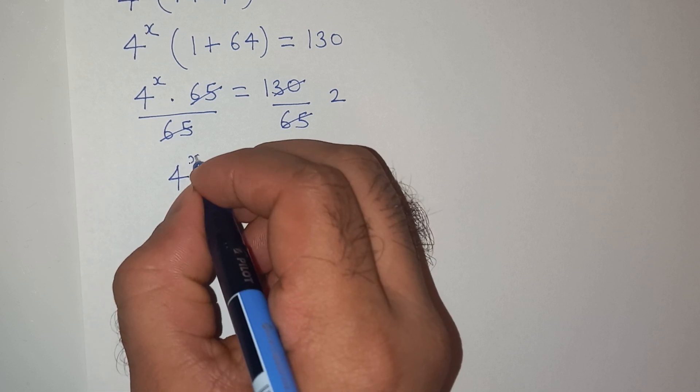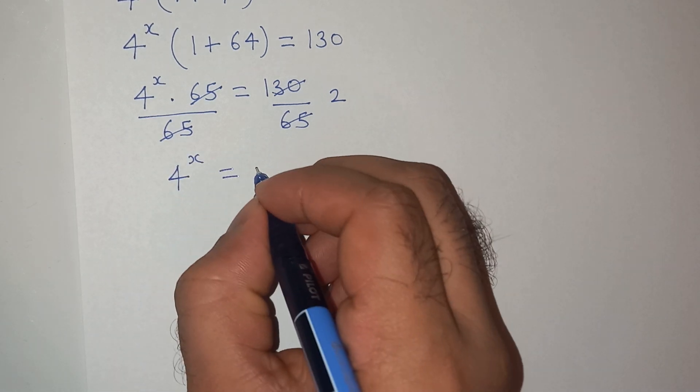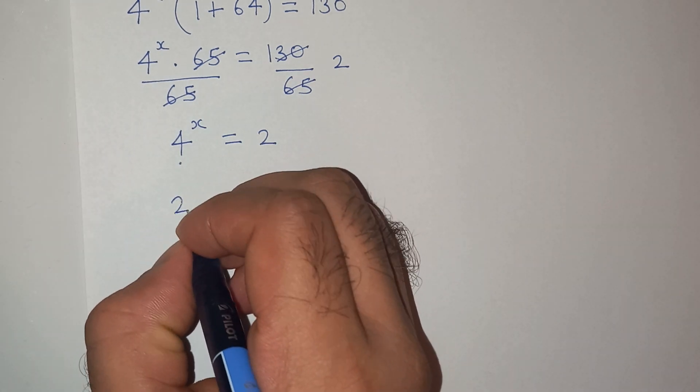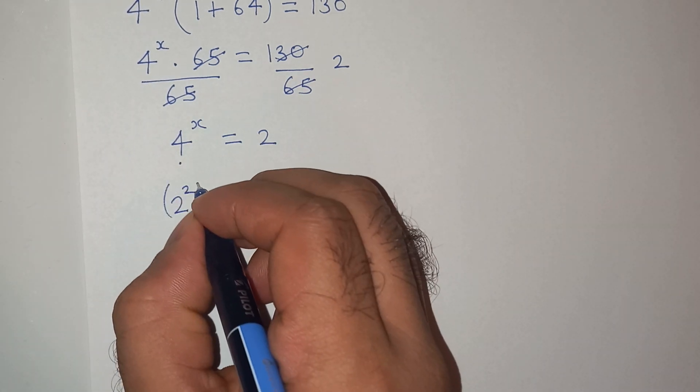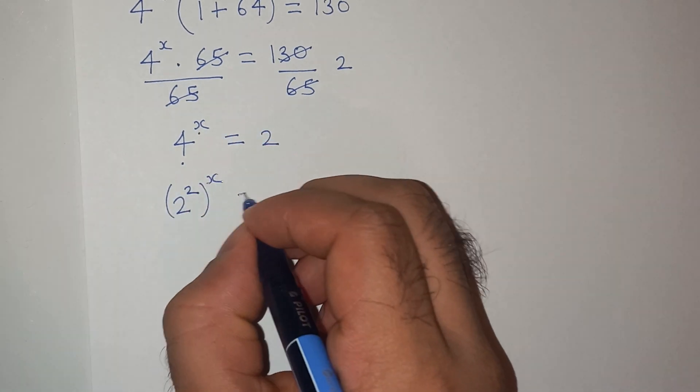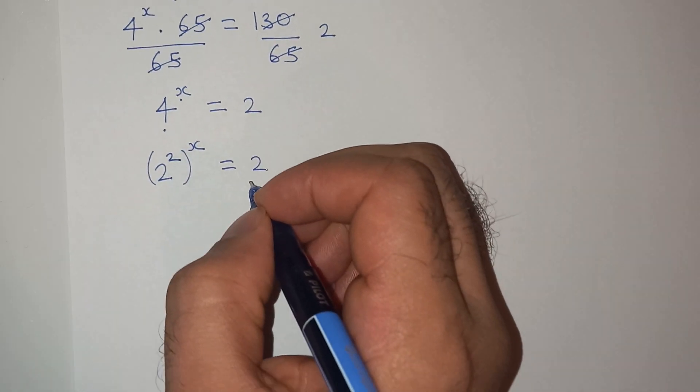Finally, we have 4 power x equals to 2. Now, this 4 can be written as 2 square and then we have power x equals to 2.